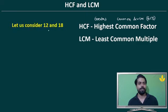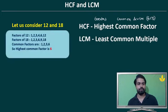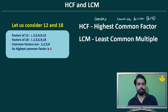Let us consider the numbers 12 and 18. The factors of 12 are 1, 2, 3, 4, 6, and 12. The factors of 18 are 1, 2, 3, 6, 9, and 18. The common factors are 1, 2, 3, and 6, and the highest among them is 6 — that is the Highest Common Factor.